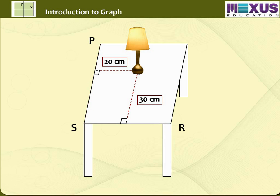This can also be written as (20, 30) where 20 represents the perpendicular distance of the lamp from edge PS and 30 represents the perpendicular distance of the lamp from edge SR.